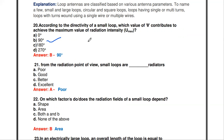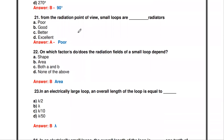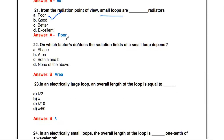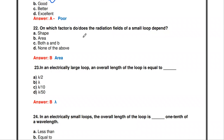From the radiation point of view, small loops are poor radiators. Loop antennas are classified into small loop and large loop based on size, and small loop antennas are poor radiators.